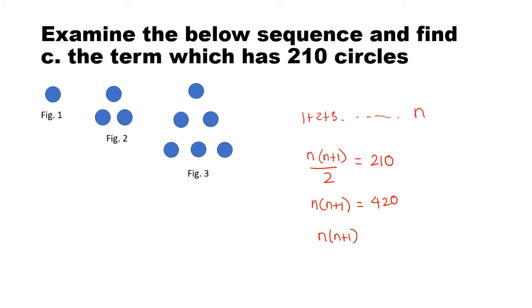But what we know is n and n plus 1 are numbers which are consecutive like 10 and 11, or 12 and 13. This has to be one such number which gives 420 result. So let's just make a guess.